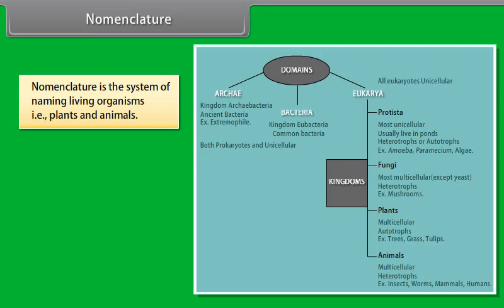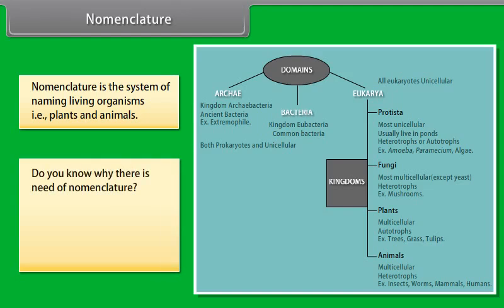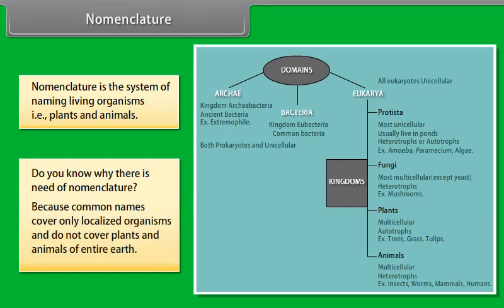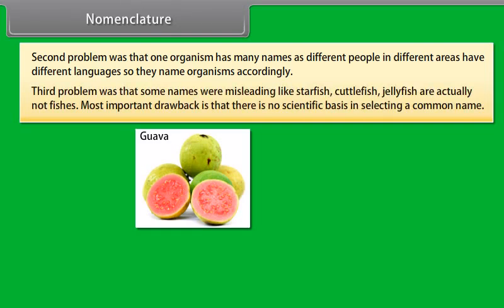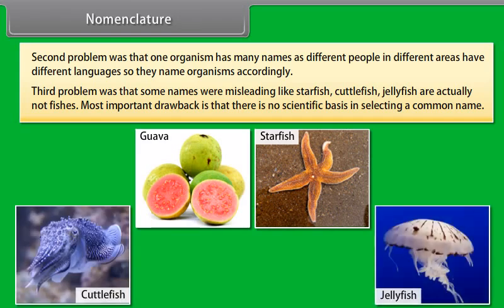Nomenclature is the system of naming living organisms, that is plants and animals. Common names cover only localized organisms and do not cover plants and animals of the entire earth. One organism may have many names as different people in different areas have different languages. Some names were misleading — like starfish, cuttlefish, and jellyfish — which are actually not fishes. Most importantly, there is no scientific basis in selecting a common name.